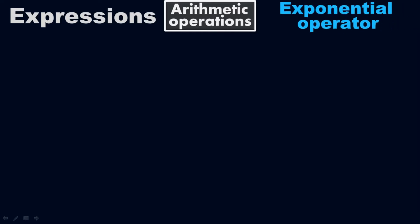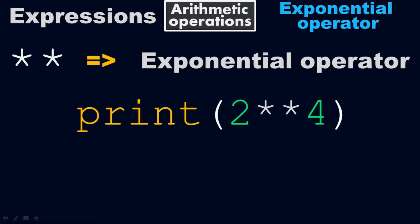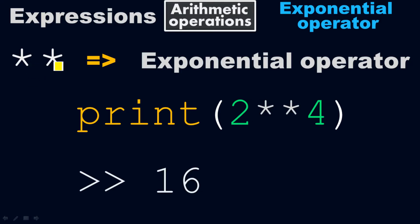This double asterisk sign is called the exponential operator. For example, print(2**4) returns 16. When you take the two asterisks together, this is called the exponential operator. So exponentiation is shown with the help of the double asterisks.